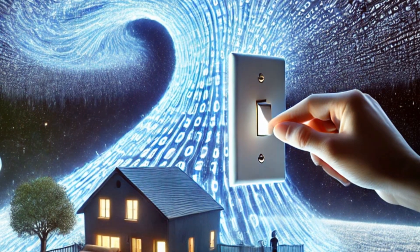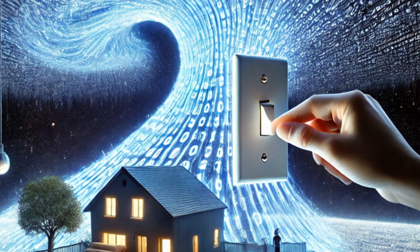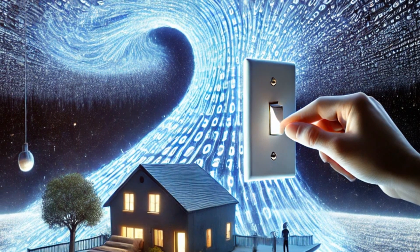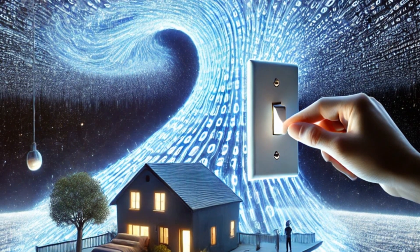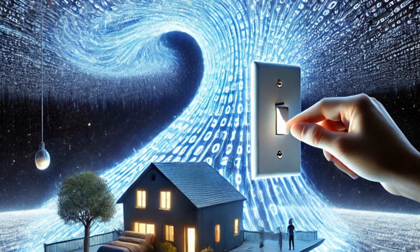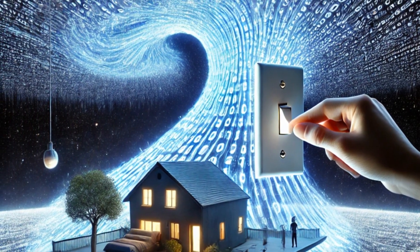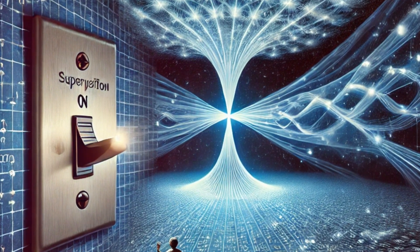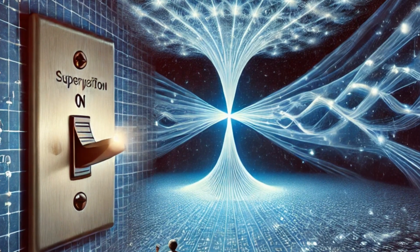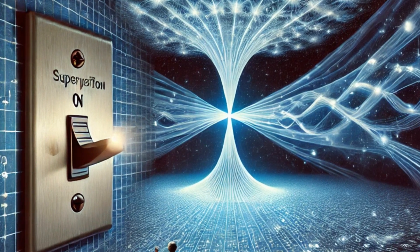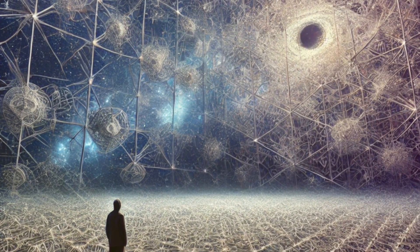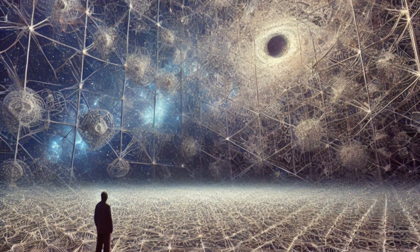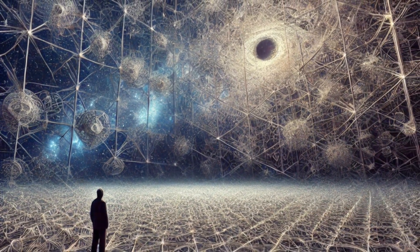Even more fascinating, the very act of flipping the switch creates a kind of pattern, just like the waves in the ocean. And this pattern encodes information. But here's the magic: in QIH, we don't just use zeros and ones to describe reality. Instead, the information of the universe is encoded in the very geometry of space.